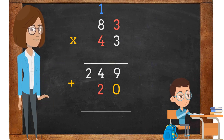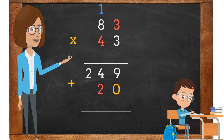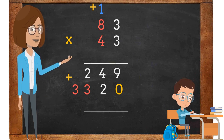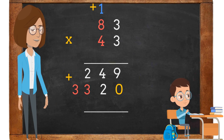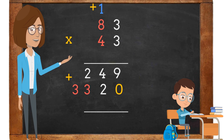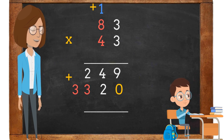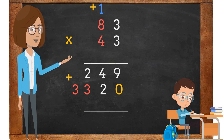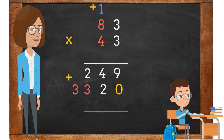The 1 is placed on top of the 8. The fourth step will be to multiply 4 times 8. 4 times 8 is 32. Next, we are going to add the 1 above the 8 to 32. 1 plus 32 is 33. The 3 is placed under the 2 in the hundreds place, and another 3 is placed in the thousands place next to the 3 in the hundreds place.